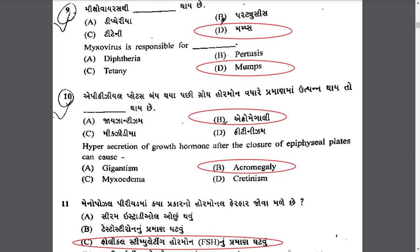Hypersecretion of growth hormone after the closure of epiphysial plates causes which condition? Hypersecretion of growth hormone after the closure of epiphysial plates can cause acromegaly. If the hypersecretion of growth hormone occurs before epiphysial plates close, then giantism occurs.